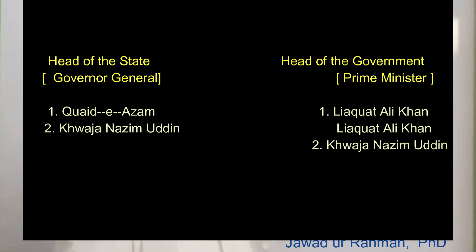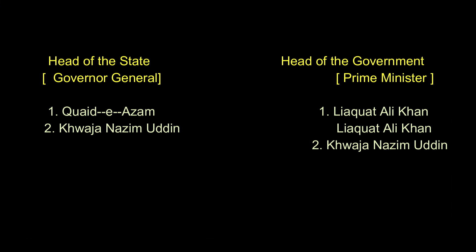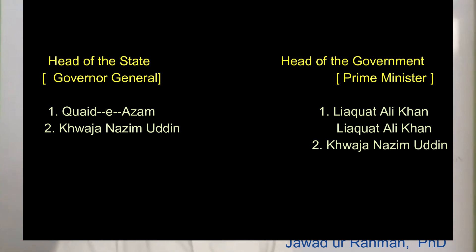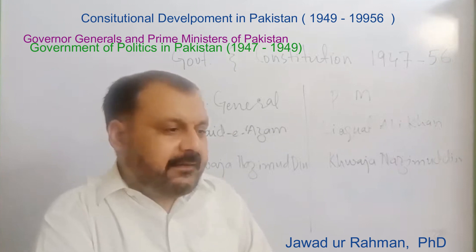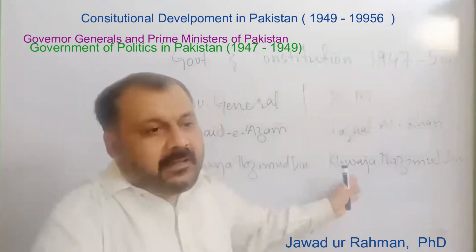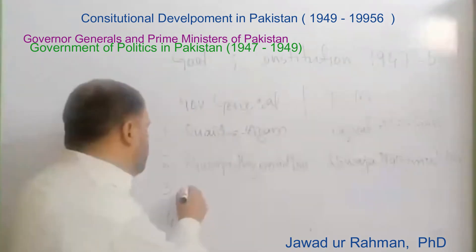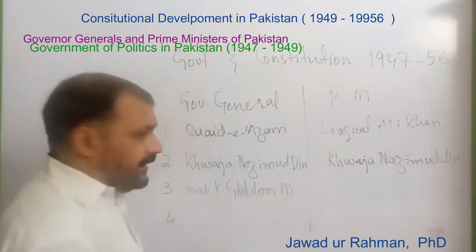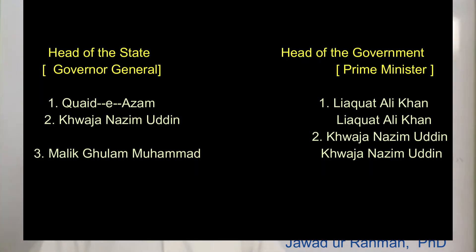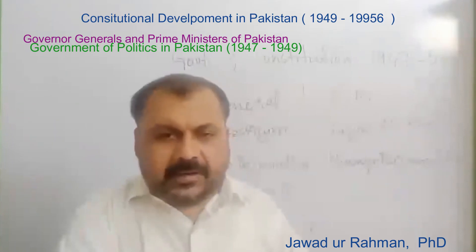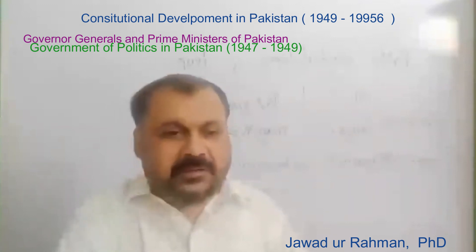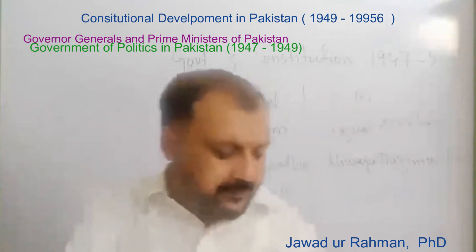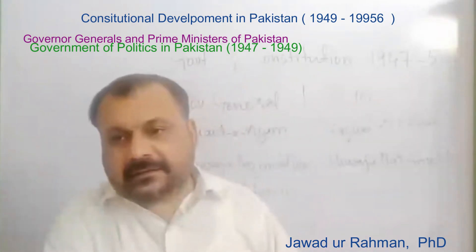Liaquat Ali Khan's assassination created a sudden vacuum in government, which was filled by Khawaja Nazimuddin, who became Prime Minister. He then recommended Malik Ghulam Muhammad — a bureaucrat, a businessman, and former Finance Minister of Pakistan — to the Crown in Great Britain as the next Governor General. Ghulam Muhammad was duly appointed Governor General and remained in that position until August 1955.